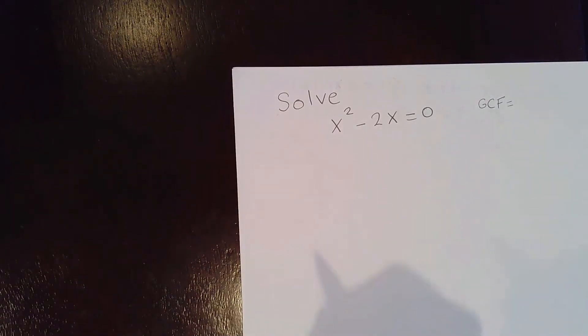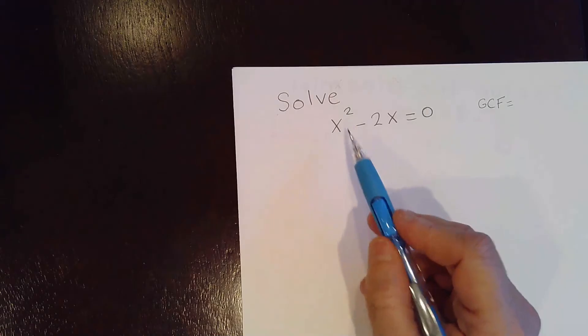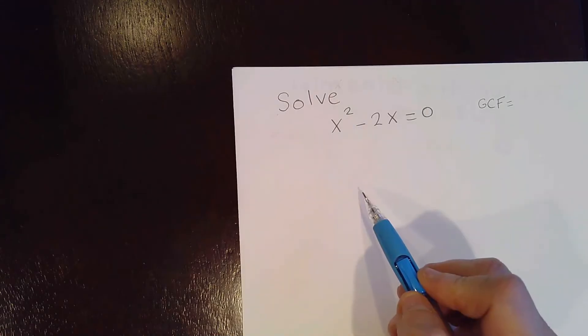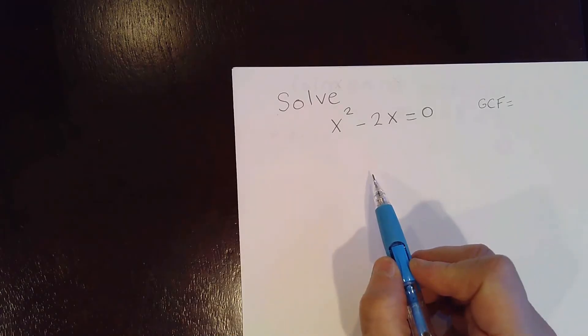Hello everybody. Today we're going to solve the quadratic equation x squared minus 2x equal to 0. If you notice, this equation doesn't have a constant.